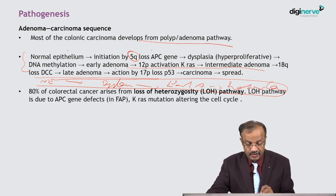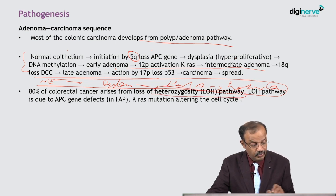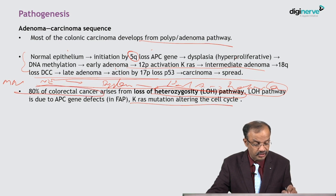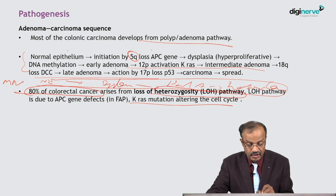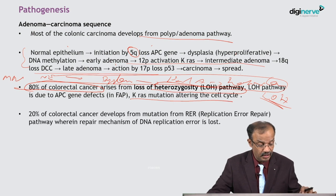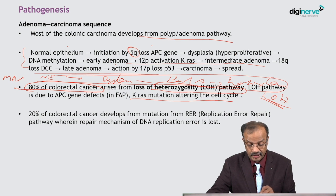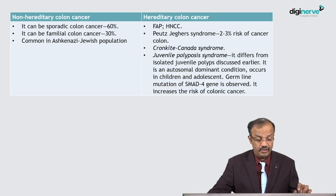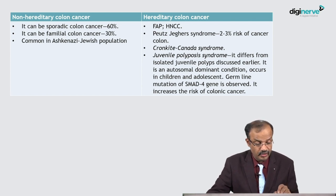80 percent of colorectal cancers involve the loss of heterozygosity (LOH) pathway, which is very important. The LOH pathway is due to APC gene defect in FAP and K-ras mutation altering the cell cycle — this is an MCQ question. 20 percent of colorectal cancers arise from the replication error repair (RER) pathway, wherein the DNA replication error repair mechanism is lost. This applies to hereditary and sporadic colon cancer.